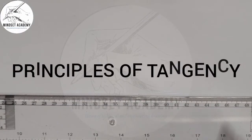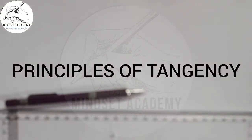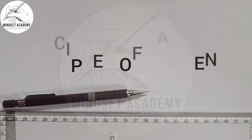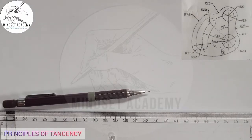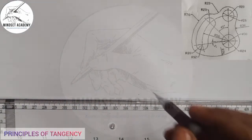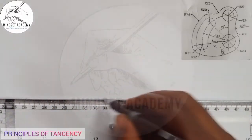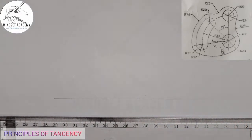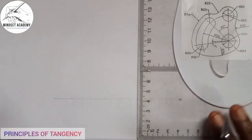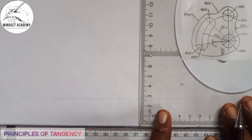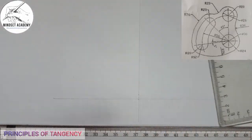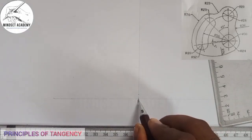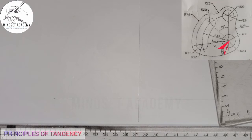Welcome to Mindset Academy. In this video we want to reproduce the figure displayed on the right-hand side of the screen using the principle of tangency. The first thing you have to do is draw a horizontal line, then a vertical line. They meet at a center point, which is the center of the first circle we will draw.